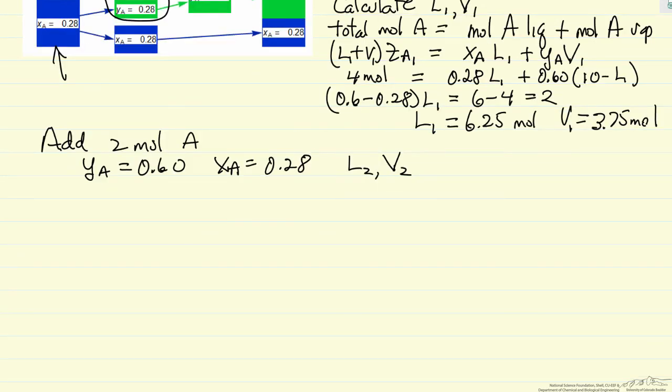The simulation shows we have to evaporate a fraction of the liquid phase, and we have to evaporate both A and B because the liquid phase mole fraction has to stay at 0.28. I'm going to use L vaporized to indicate the amount of liquid that is vaporized to satisfy the mass balances, and we're going to solve for this L vaporized.